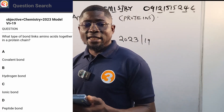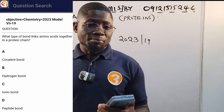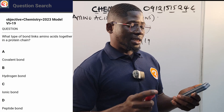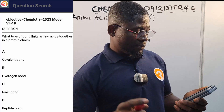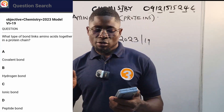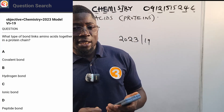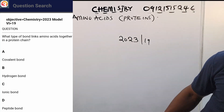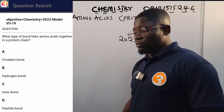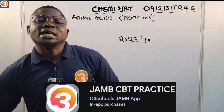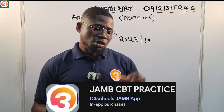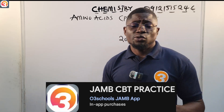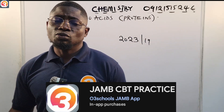The options are: A — covalent bond, B — hydrogen bond, C — ionic bond, D — peptide bond. Come back to this question at the end of the class, because at O3 Schools we believe in giving you value first — once we have taught you, answering questions will be the least of your problems.